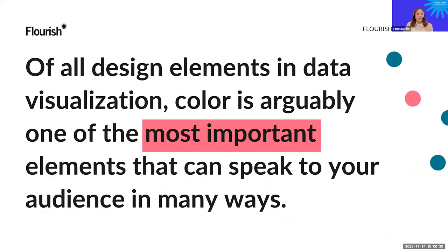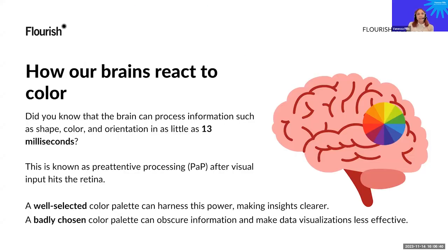From these examples, of all design elements in data visualization, color is arguably one of the most important elements and can speak to your audience in many ways. Our brain can process information such as shape, color, and orientation in as little as 13 milliseconds. This process is known as pre-attentive processing and happens after visual input hits the retina. A well-selected color palette can harness this power and make insights clearer, whereas a badly chosen palette can obscure information and make the visualization less effective.